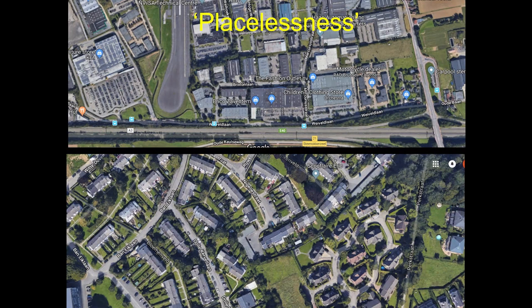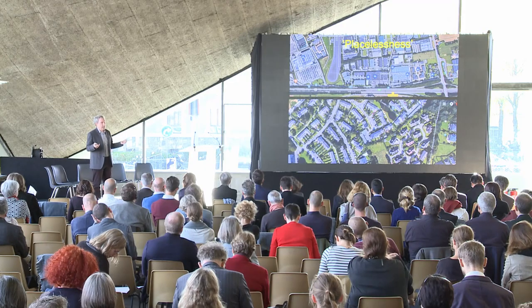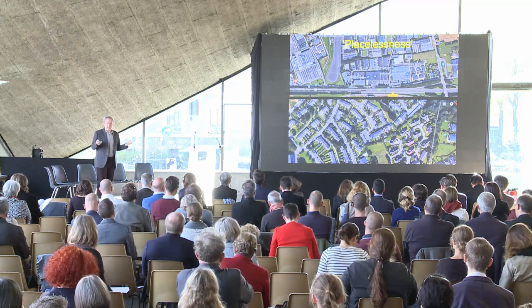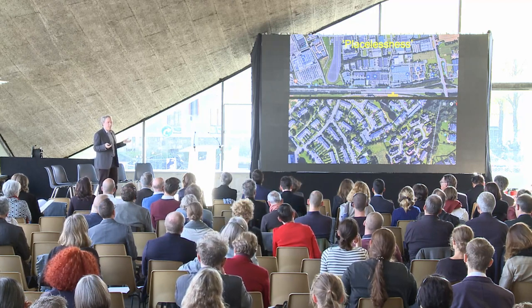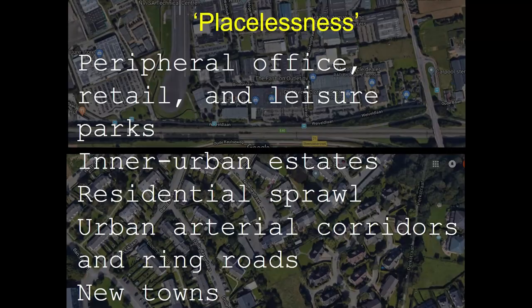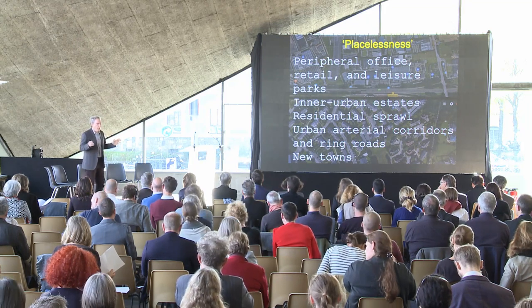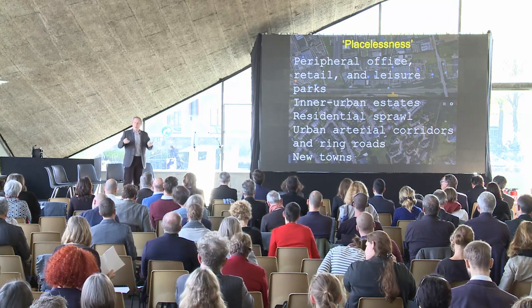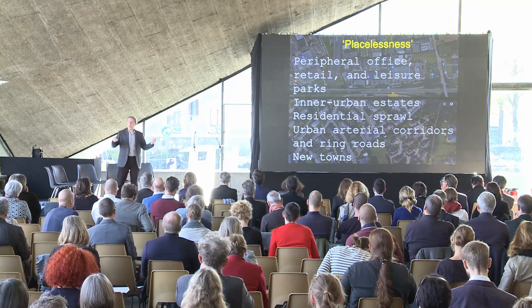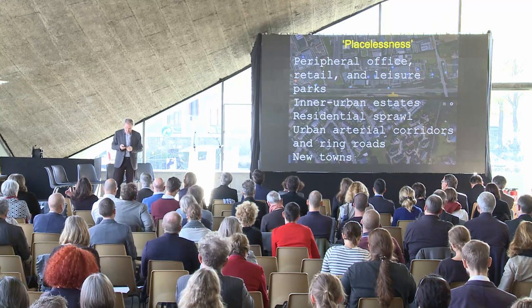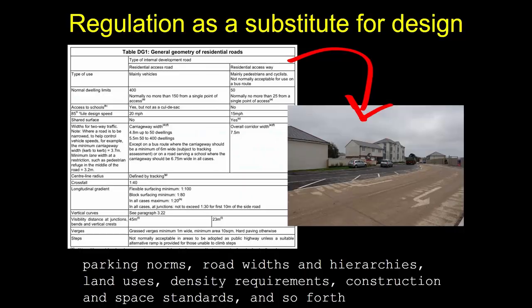Despite doing this for an awfully long time, and despite all those motivations, many people argue that certainly since the Second World War we've tended to build places that not many people love. Some people describe them as placeless — all sorts of different types of places, often on the outskirts of our cities, which for various reasons don't quite work, aren't really quite for people. We don't love them, and very often we criticize them. Why is that? One of the reasons, I would argue, is because we tend to substitute regulation for design.